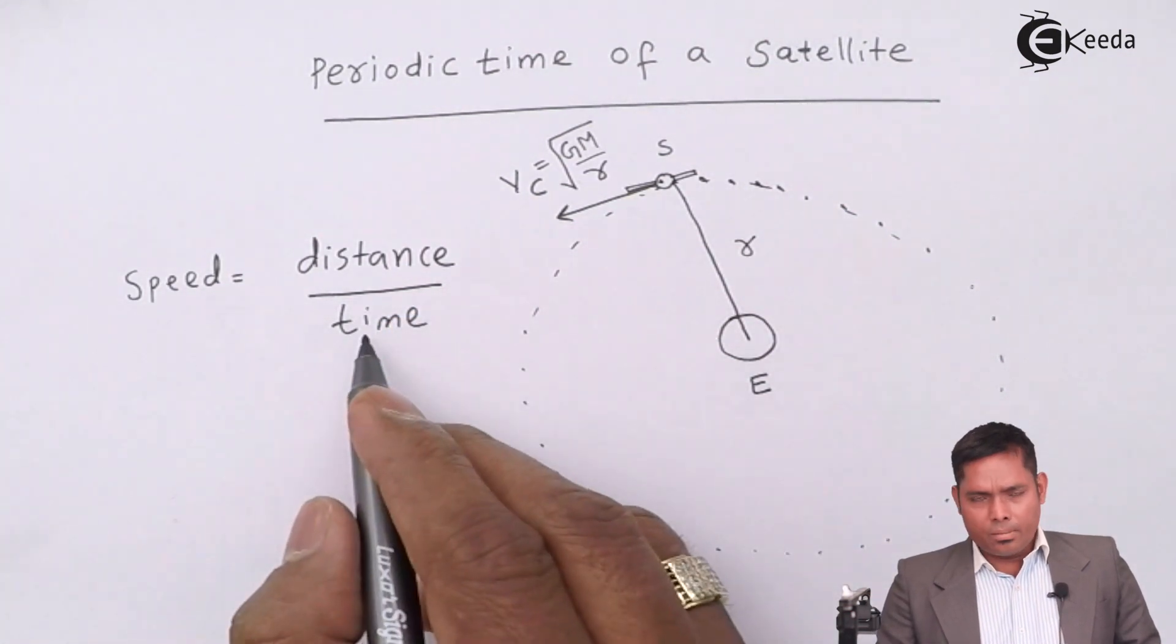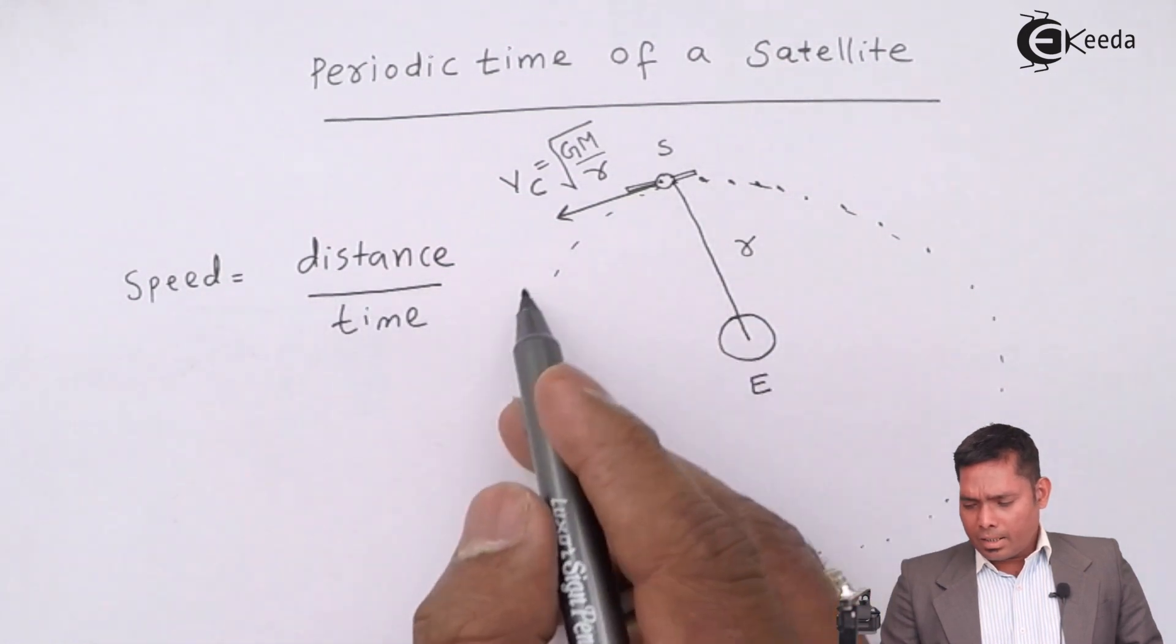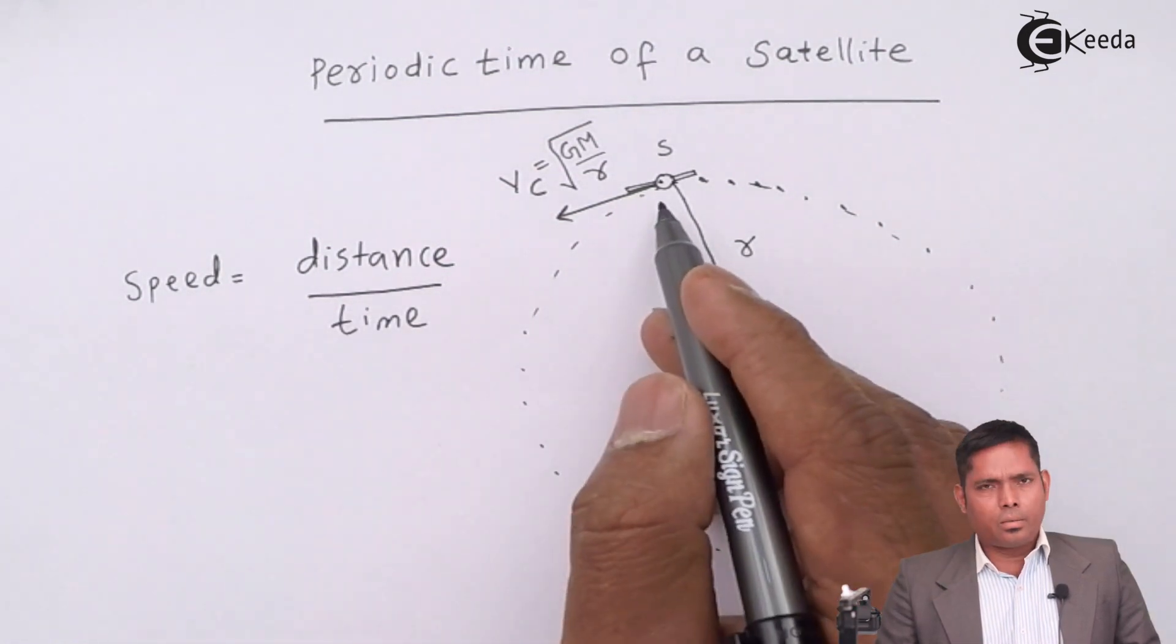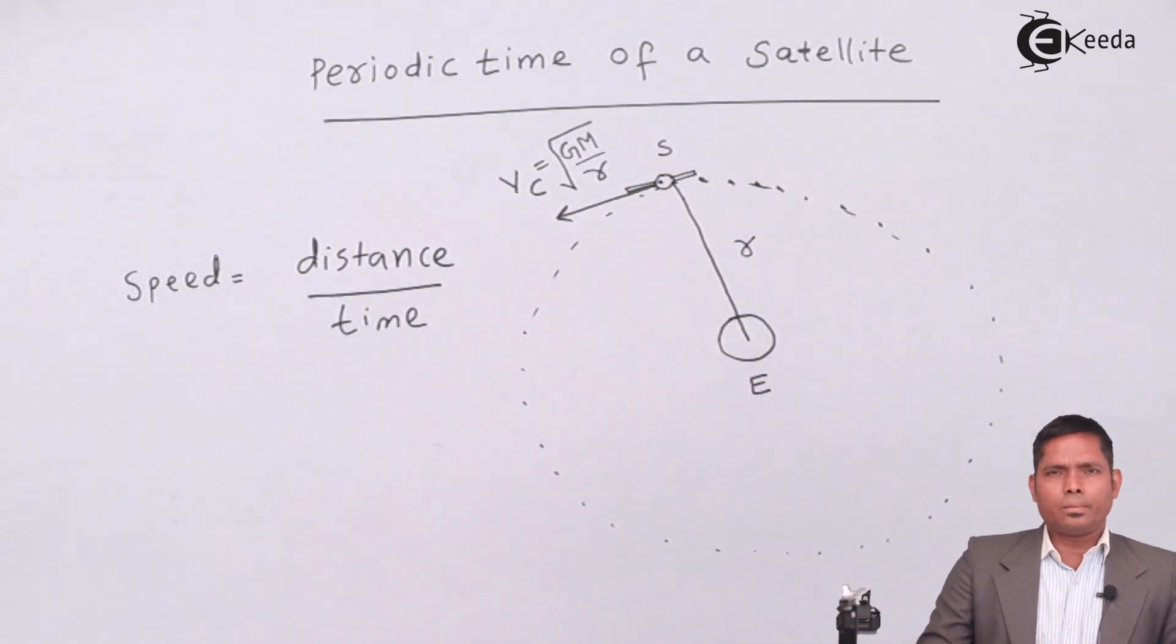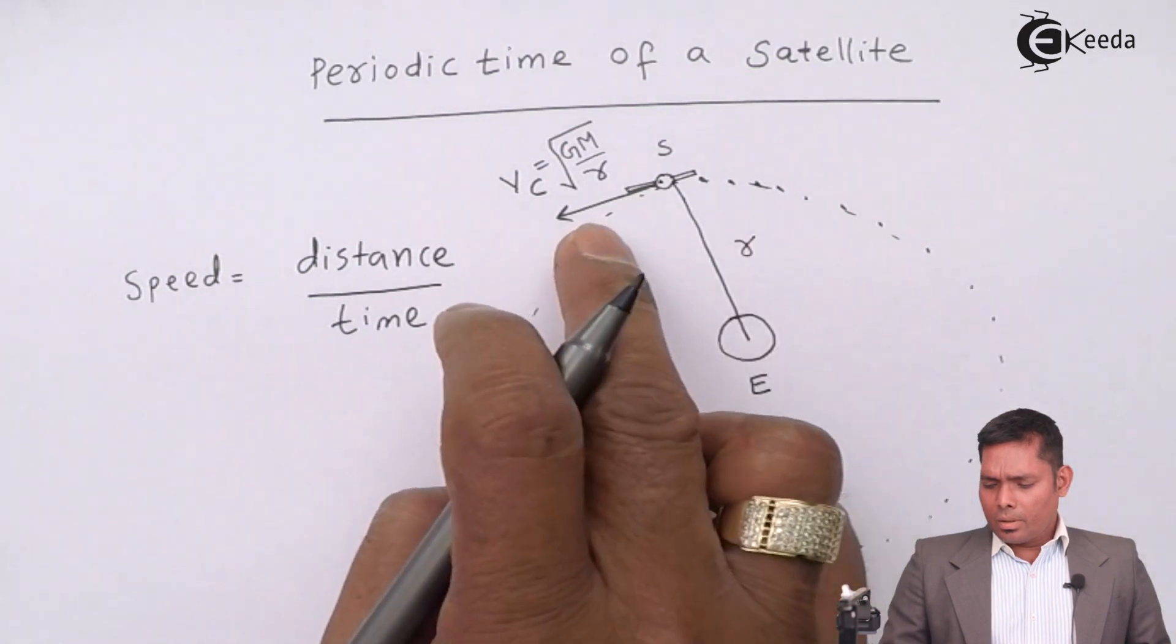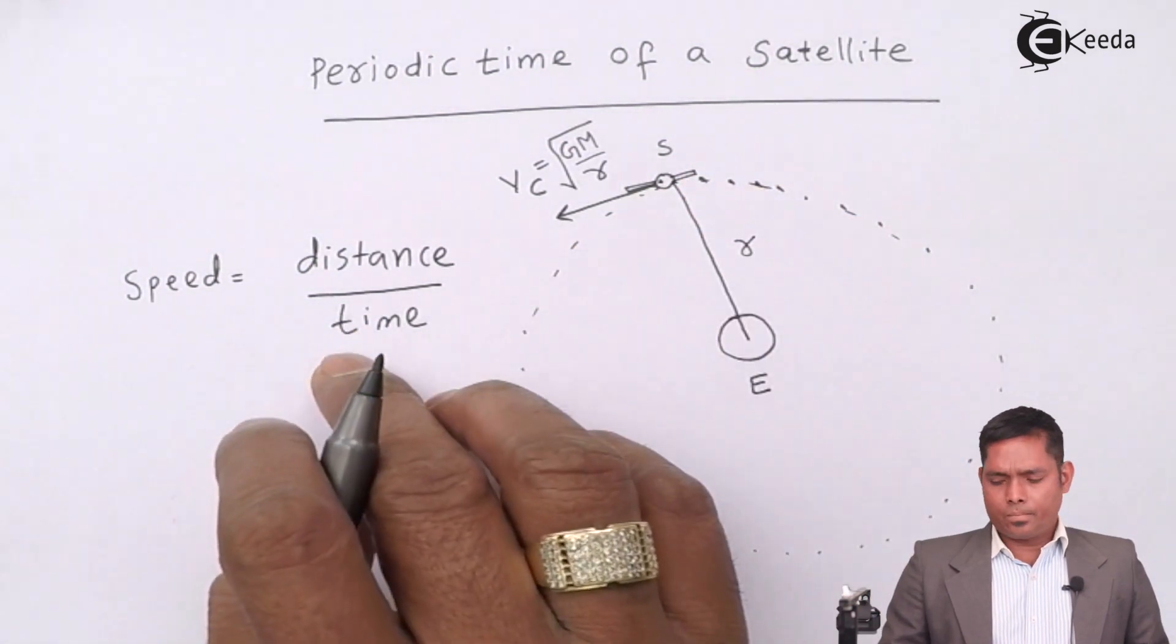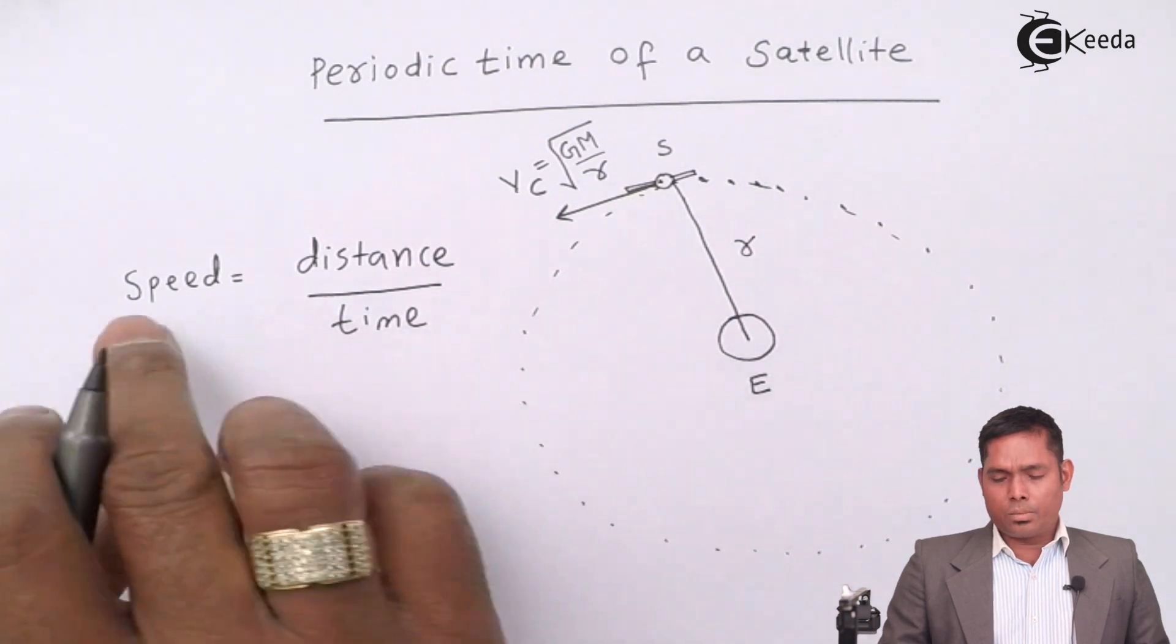So I want time. If the distance covered is exactly 2 pi r, because the circumference length is 2 pi r, then that 2 pi r divided by total time is the speed.